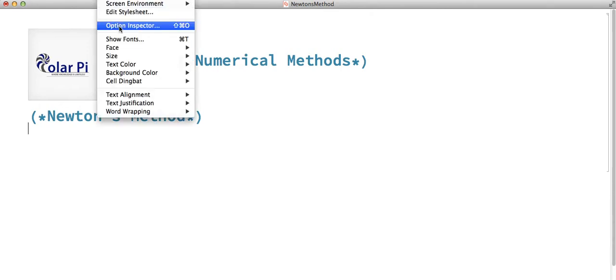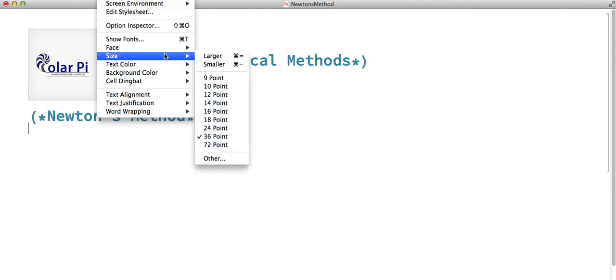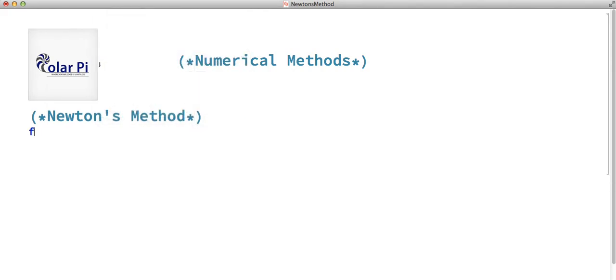Now, first, we need to figure out what our function should be, the function whose zeros we're trying to estimate. So let's pick a nice and simple function. How about x squared minus 9?